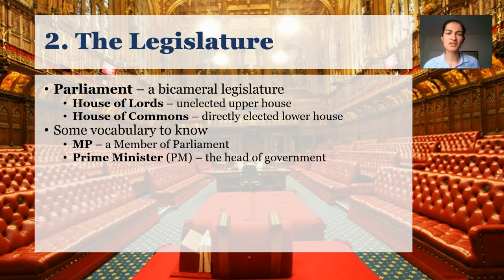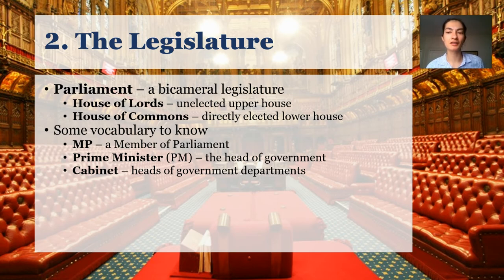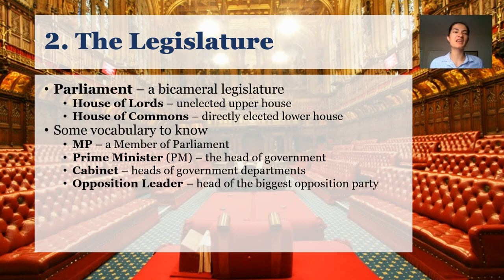We'll talk about him and his terrible hair a great deal in this unit. The other executive ministers, the heads of government departments, are known as the cabinet collectively. There's a formalized opposition — generally the leader of the largest non-government party, the second biggest party in the Commons. The leader of the opposition is the person in charge of the biggest opposition party. At present, that is Sir Keir Starmer of the Labour Party.